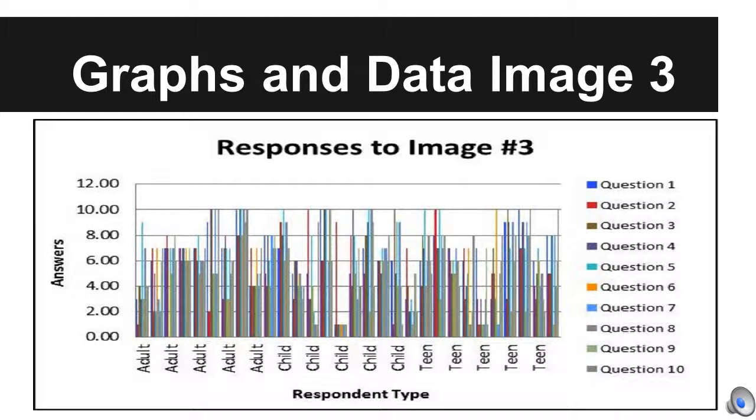Image three, the tomboy, was another graph that had mostly positive results, although there are a couple of kids and teens who have rated some questions as low as one.